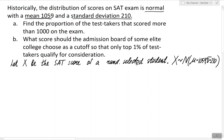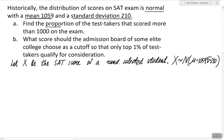Now, once we have introduced a random variable, we can look at the questions. The first question is to find the proportion of test takers that scored more than 1000 on the exam. Let's convert this into a mathematical expression. The score of a test taker is represented by our random variable X, and the question asks about scores more than 1000. So Part A is to find the probability of X being greater than 1000.